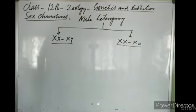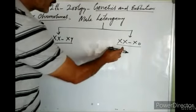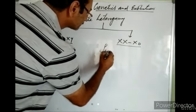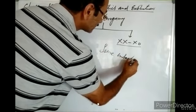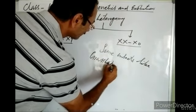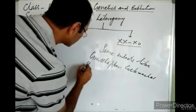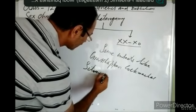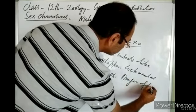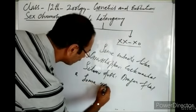Now there is another condition in male heterogamy known as the XX/X0 condition. This is found in some insects like grasshopper, cockroaches, silverfish, and dragonflies. It is also found in some nematodes, some roundworms.